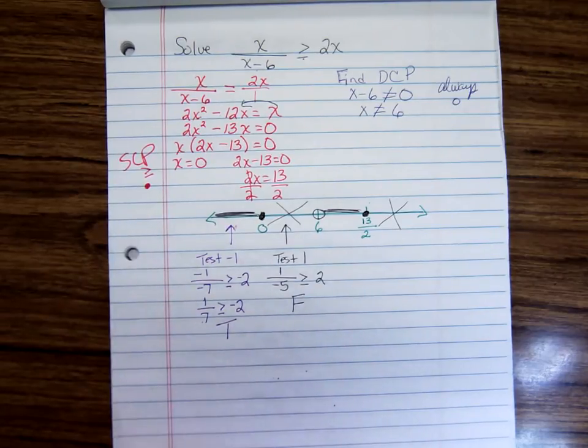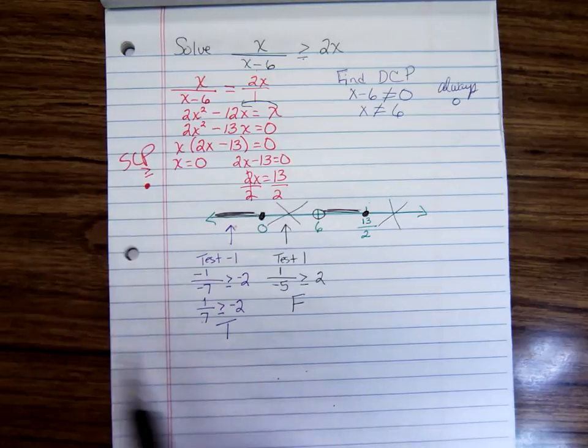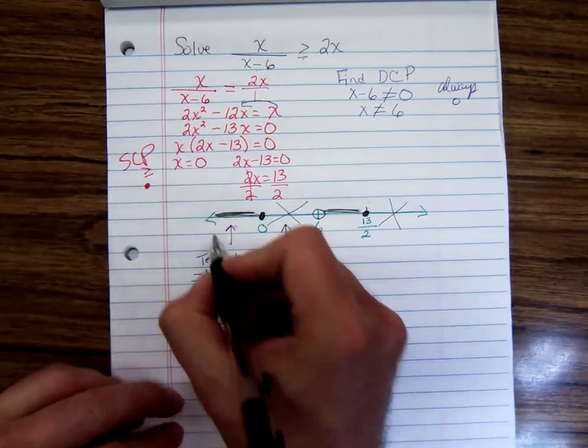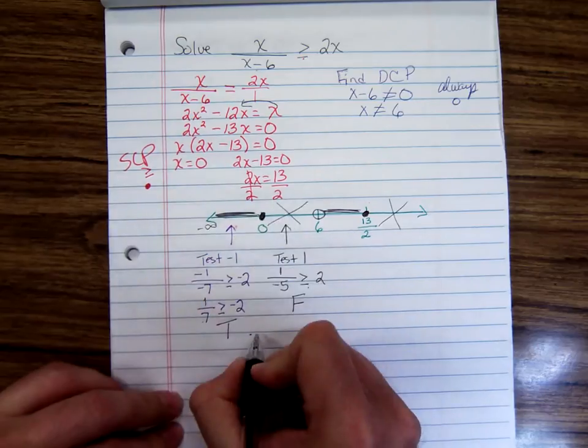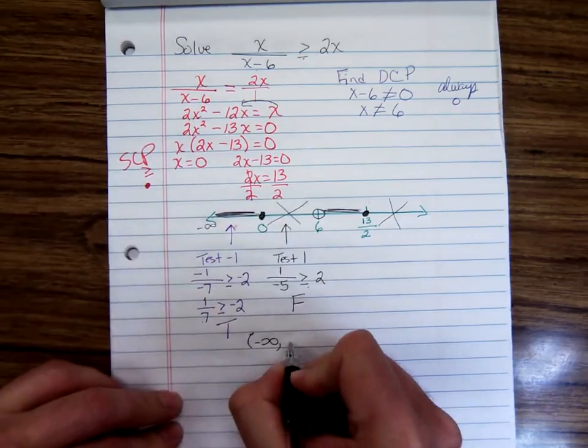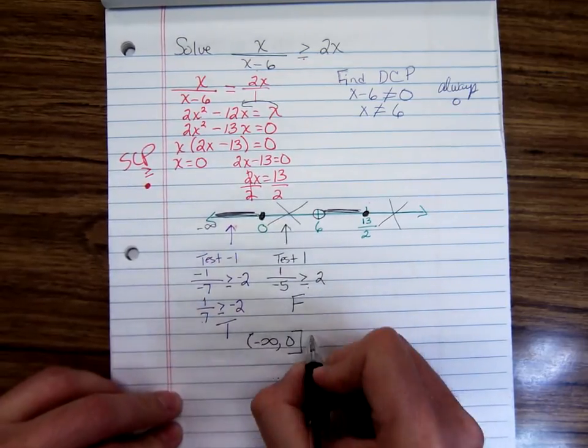Now leave the rest of them for you to check. But we can write our final answer in interval notation. Negative infinity, comma, 0, bracket, union, parenthesis, 6, comma, 13 halves.